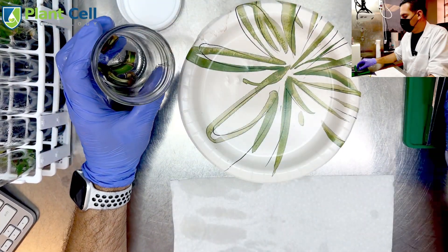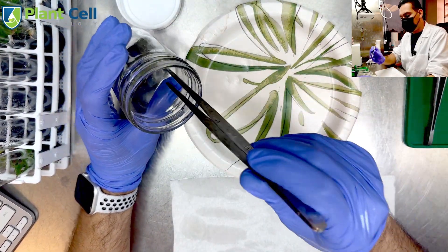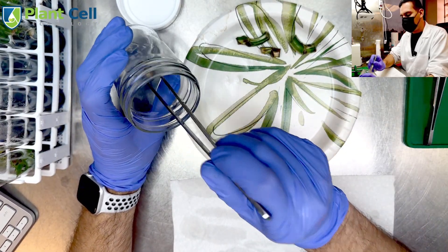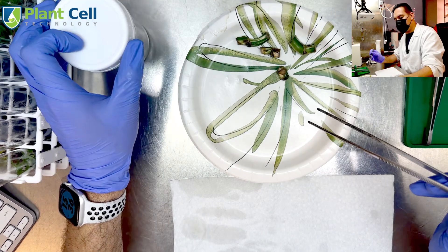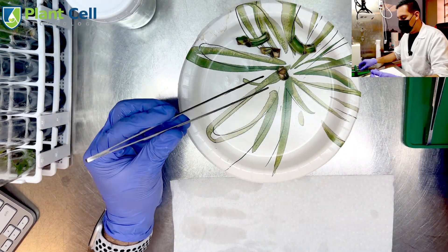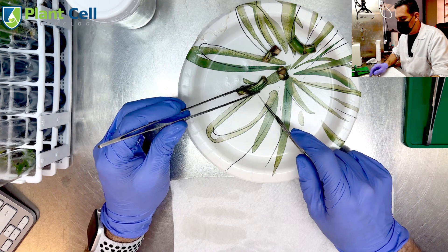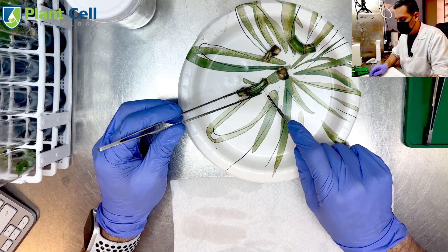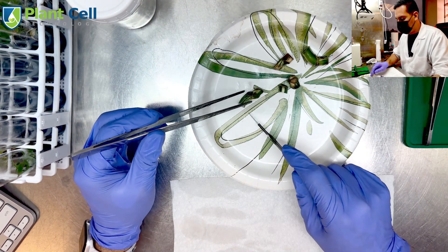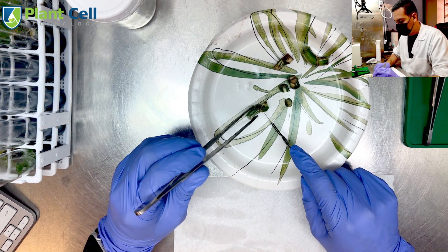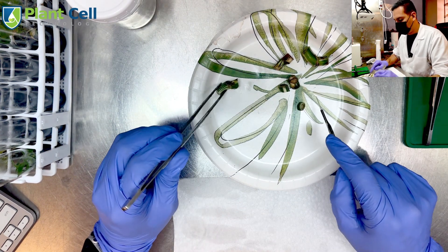Open the jar, take my forceps, take the cuttings out of the jar. Take my blade and I'm going to cut them. I don't need them to be this long, so I'm just going to cut this one on this side. The other one I also want to cut, and this one is good to go.